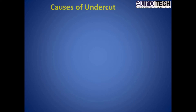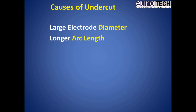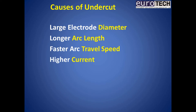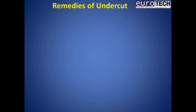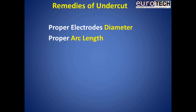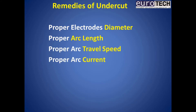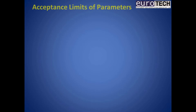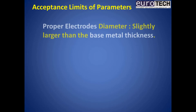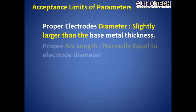Causes of undercut include the following parameters: proper arc length — normally equal to electrode diameter; proper arc travel speed; proper arc current; proper welding angle; acceptance limits of parameters; and proper electrode diameter — slightly larger than the base metal thickness.